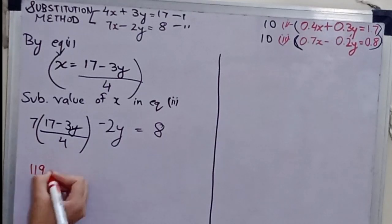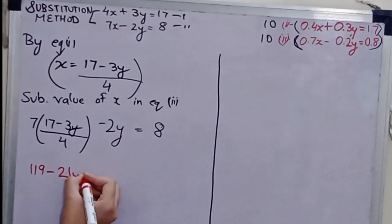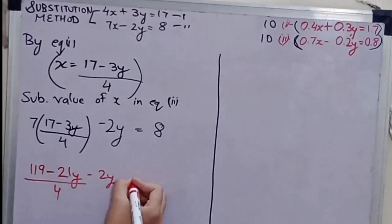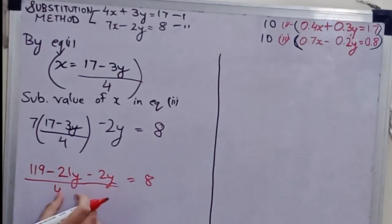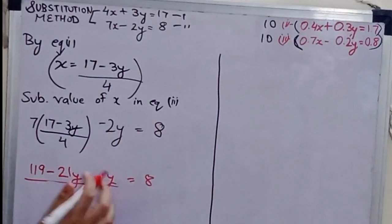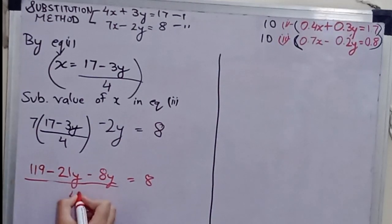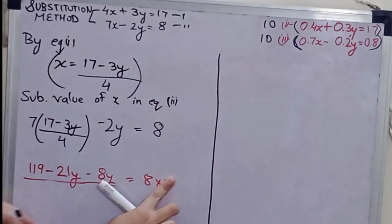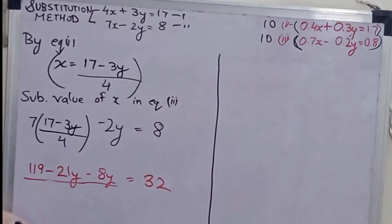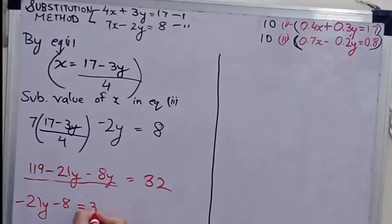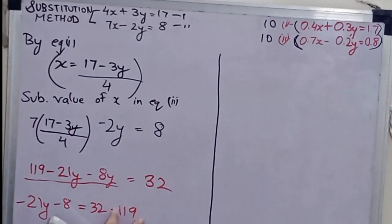This gives 119 minus 21Y minus 2Y, the whole divided by 4 equals to 8. This whole is divided by 4, so multiplying both sides by 4 gives: 119 minus 21Y minus 8Y equals to 32.